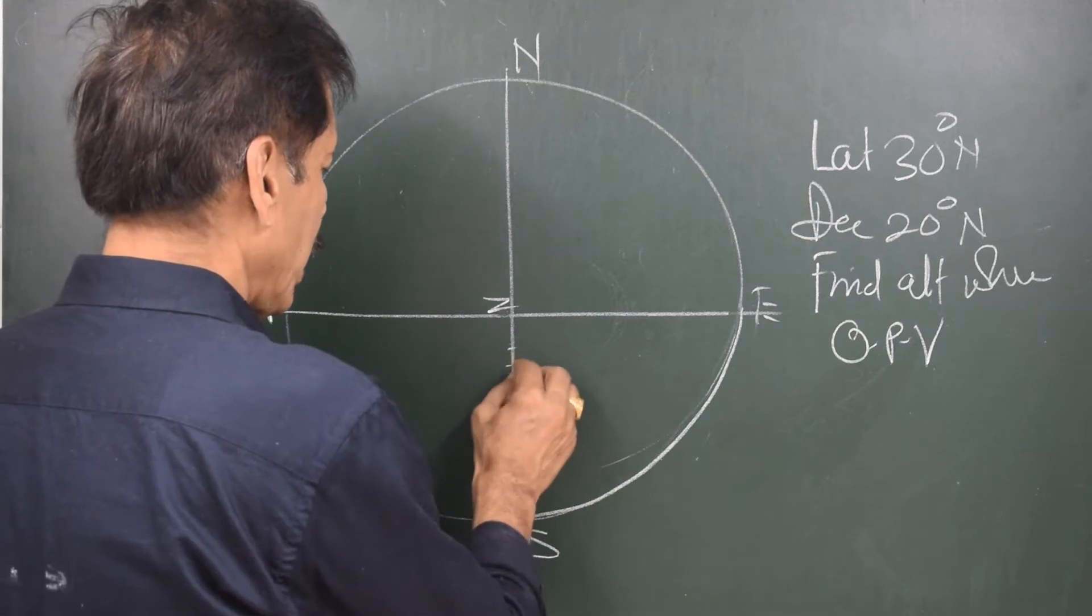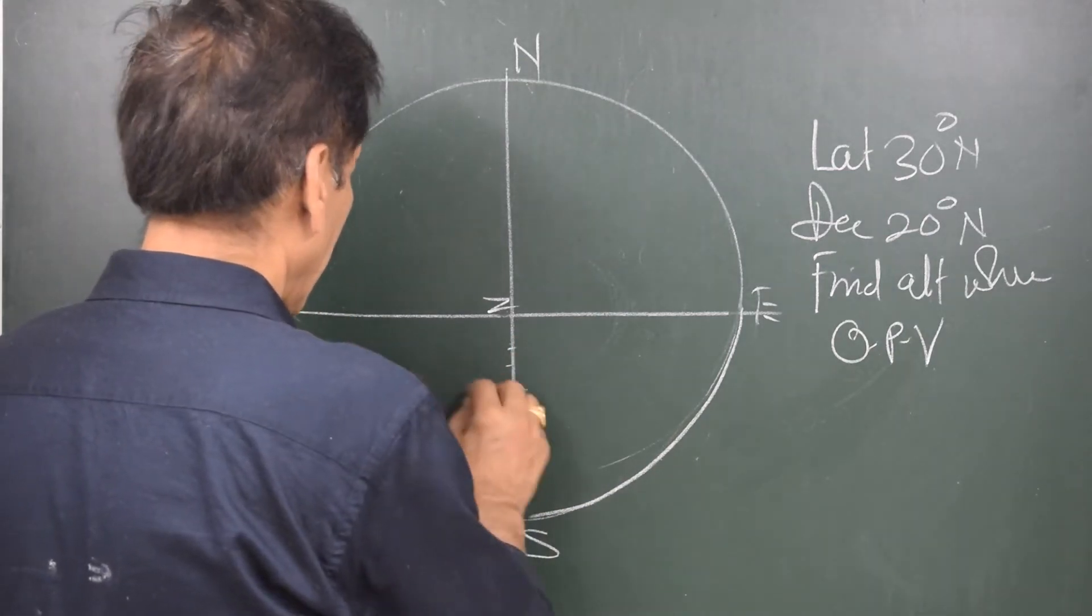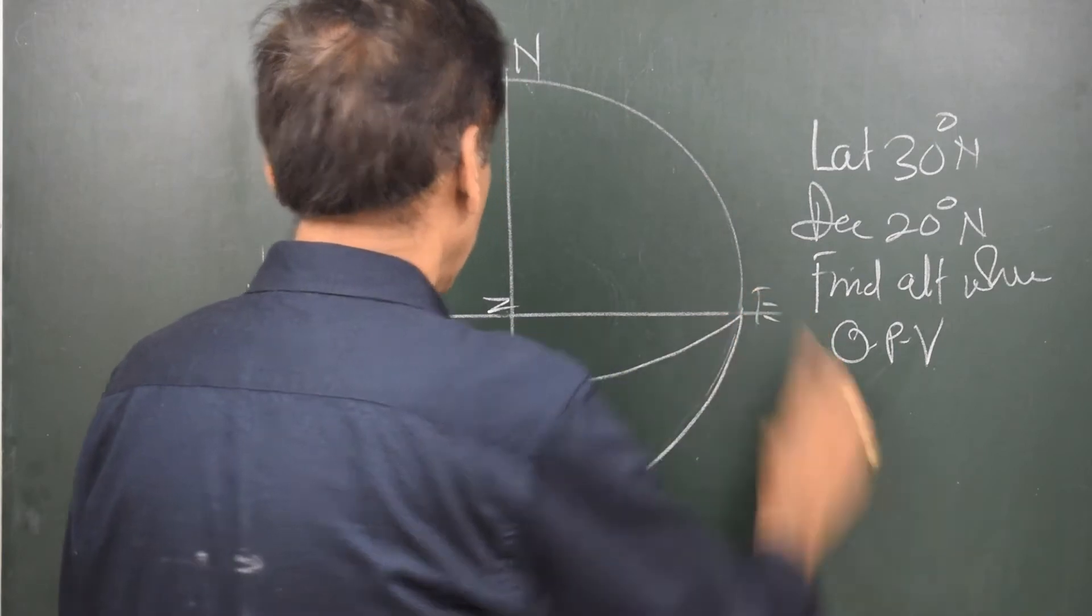So what I do is, I divide this in 9 parts. And 10, 20, 30, I will draw the equinoctial like this.